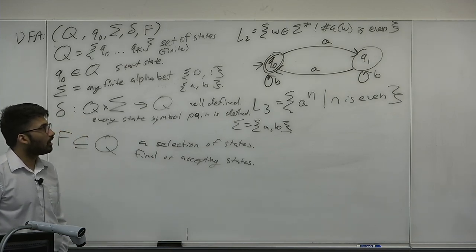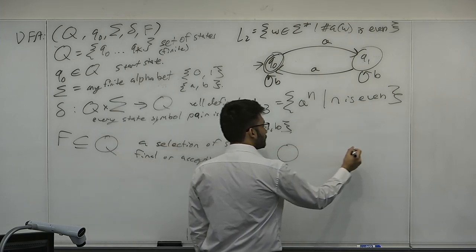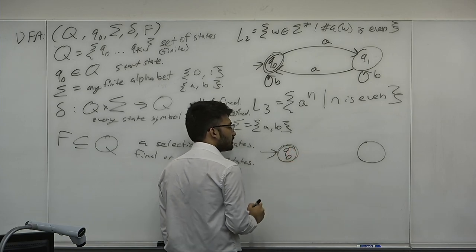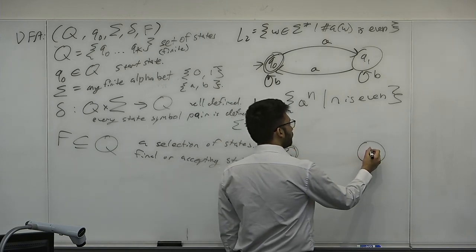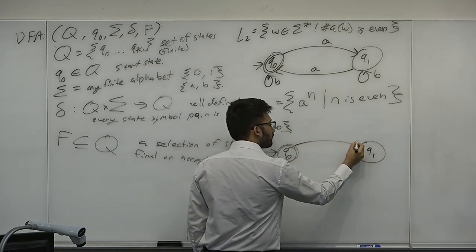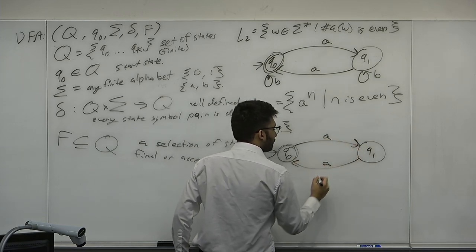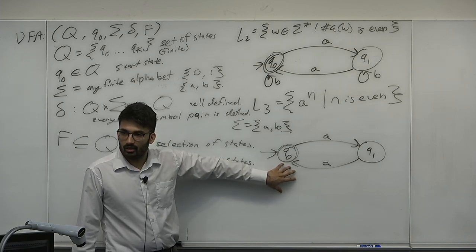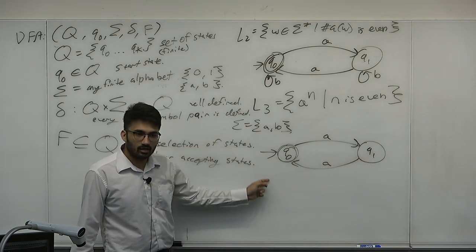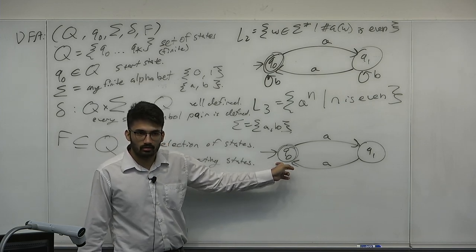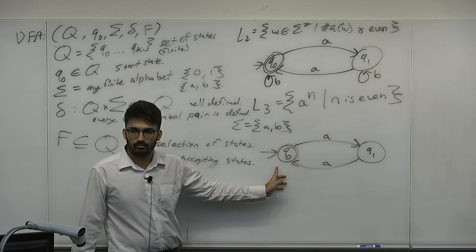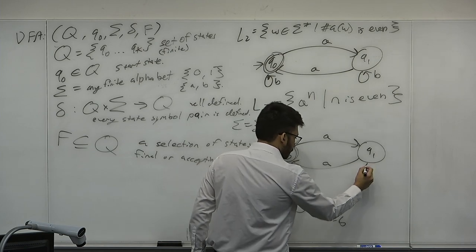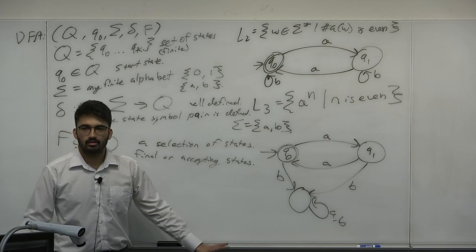L3 is very similar to L2, actually. We'll have a start state Q0 and another state Q1. We want to accept the empty string, so we make the start state accepting. When we see an A, we do the same clock thing as before. This correctly decides strings that only contain A's — odd-length strings of only A's end at Q1 and are rejected, even-length strings end at Q0 and are accepted. What happens if we see a B? We're supposed to just break — go to some state that doesn't get accepted. So we go to a garbage state.